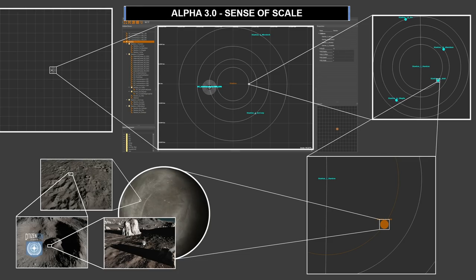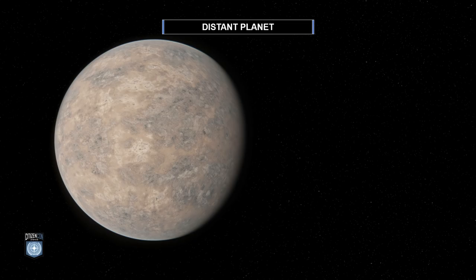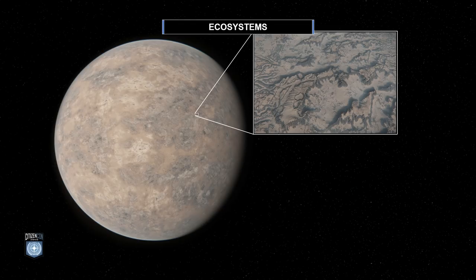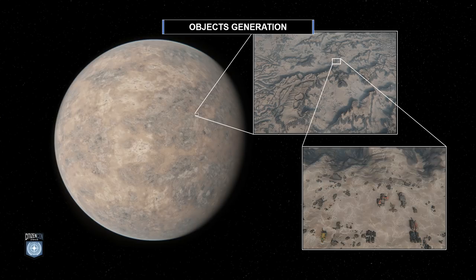This picture shows the sense of scale we achieved with Alpha 3.0. As you can see, we are zooming in from a solar system down to a planet's surface. Here is a Daemon planet view from space. While zooming in, we start seeing high-level formations and ecosystems. Getting closer, objects are starting to appear.